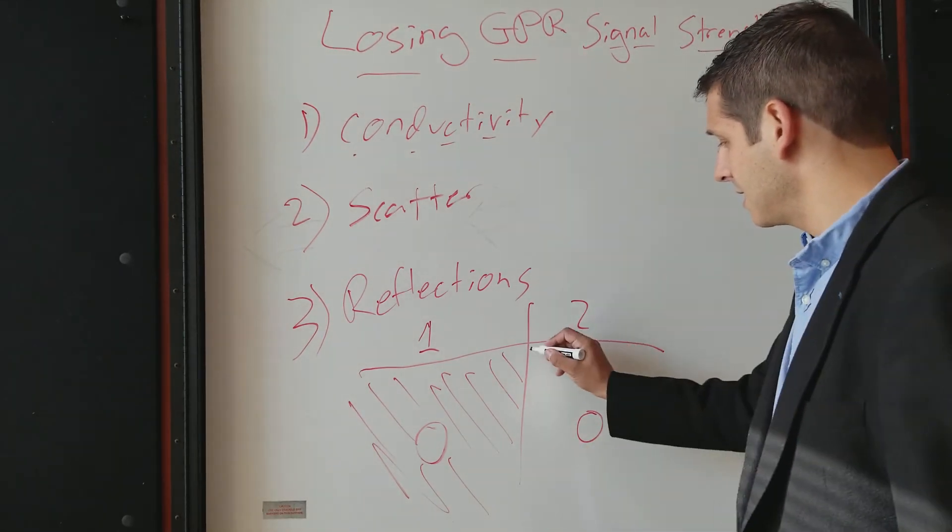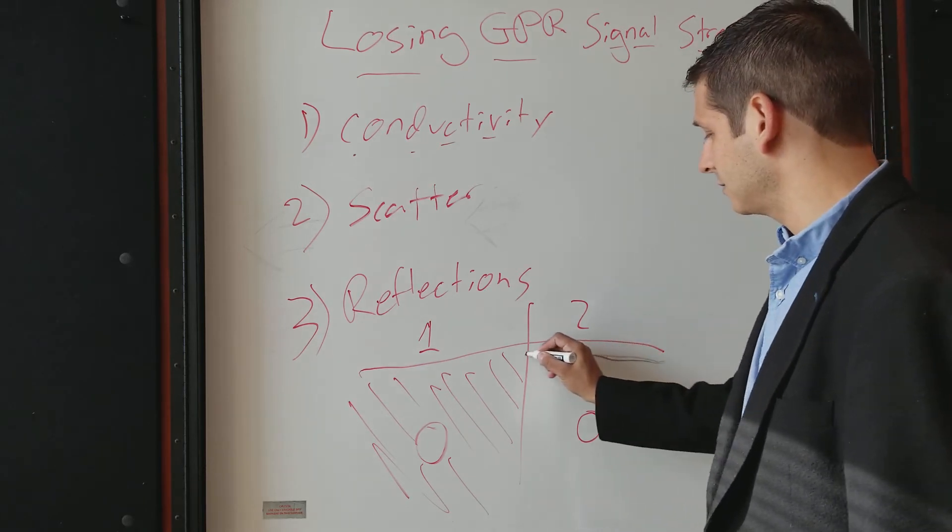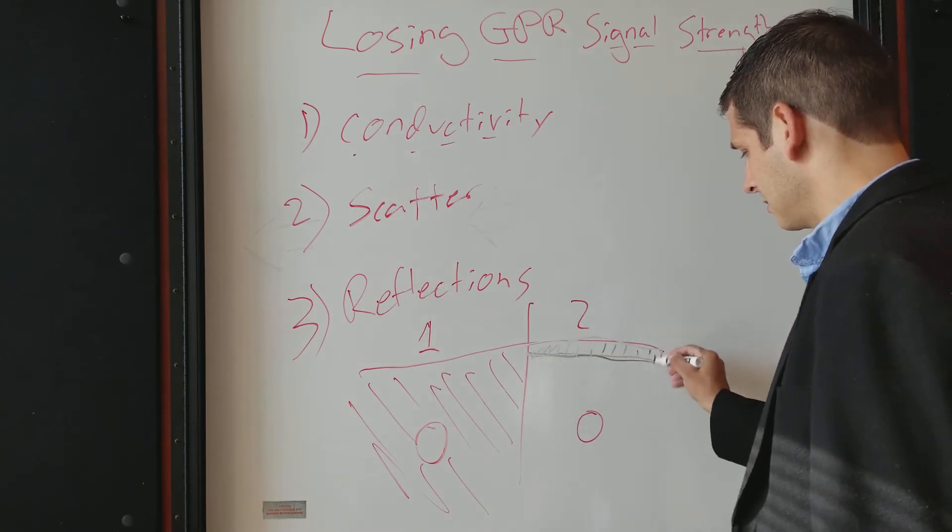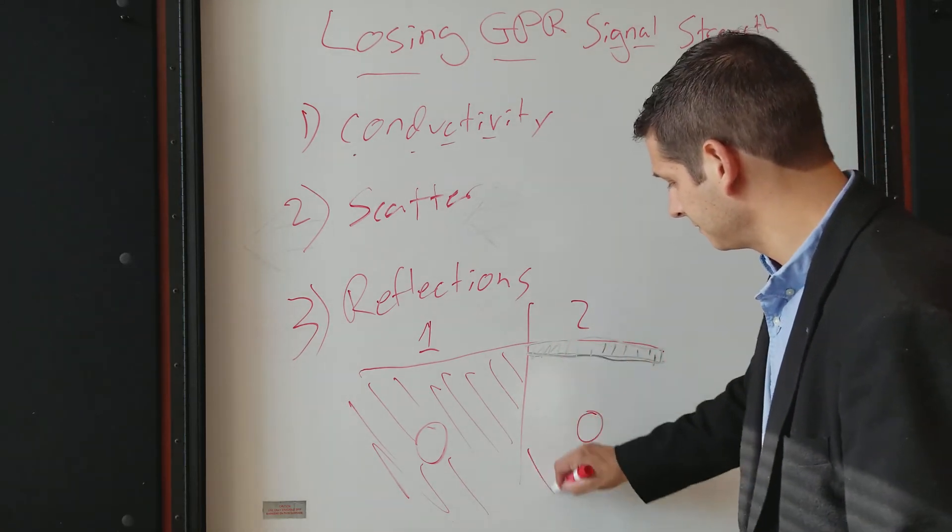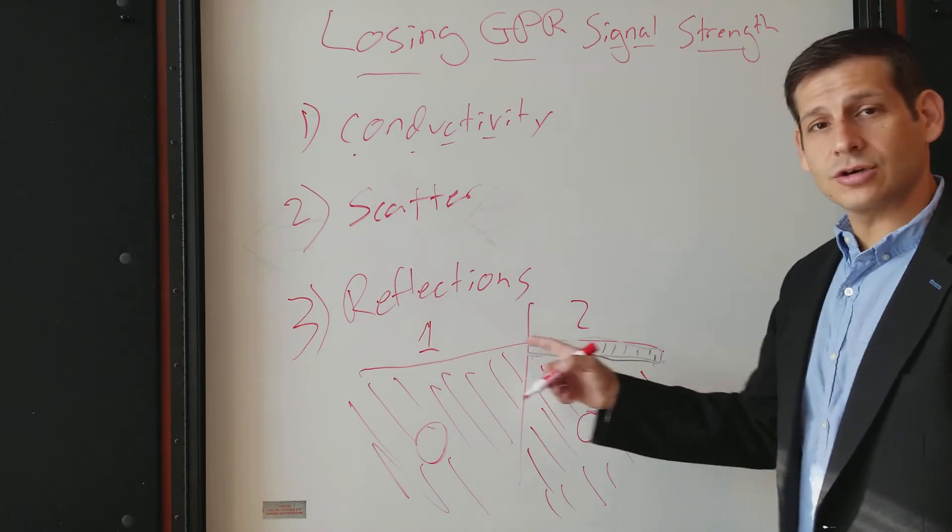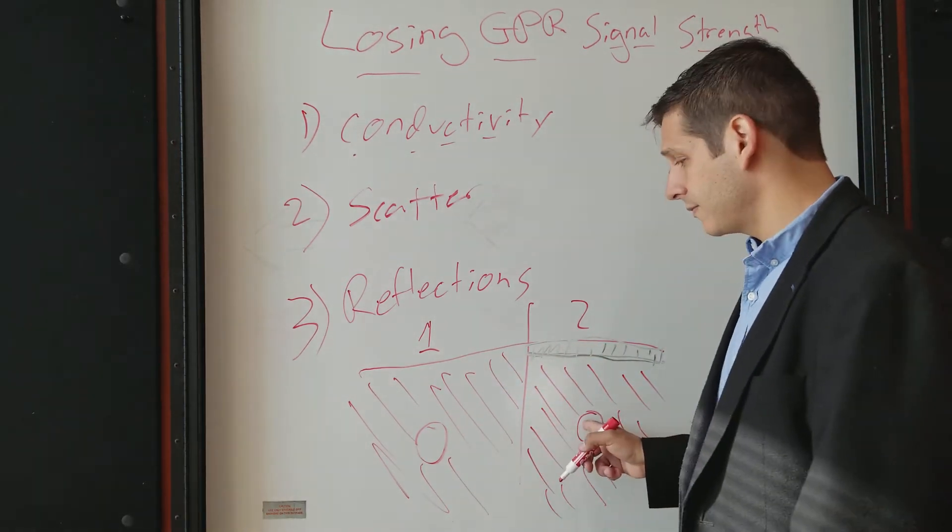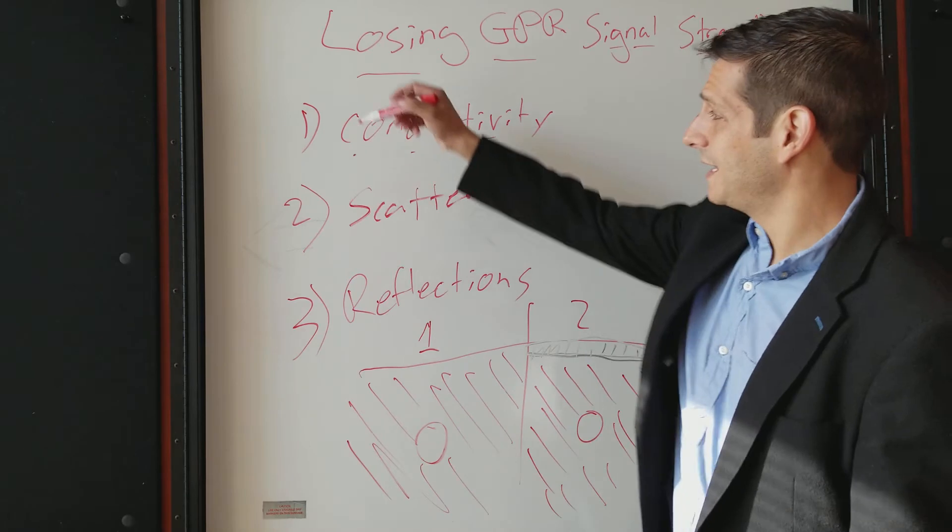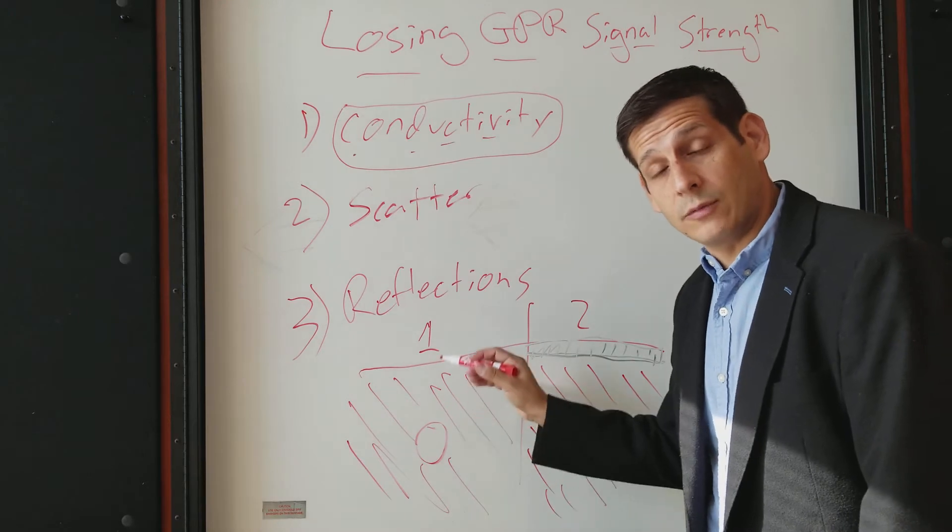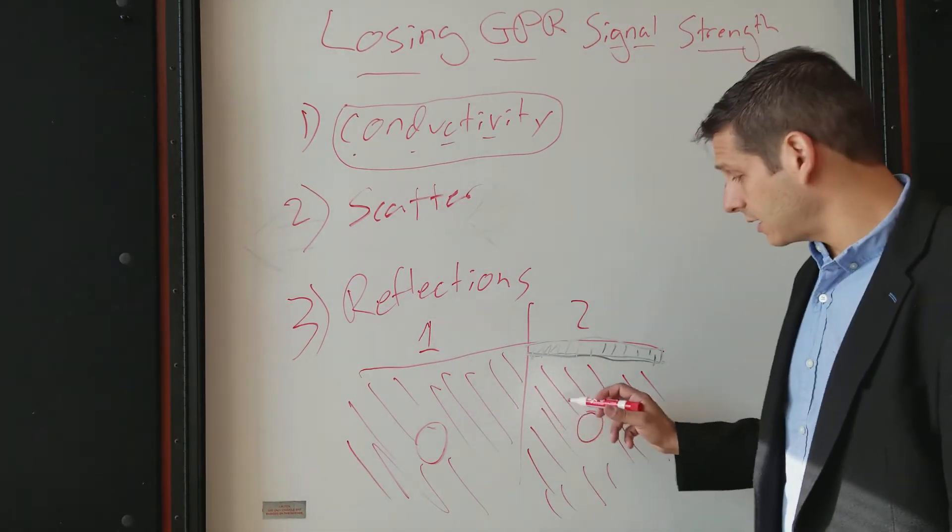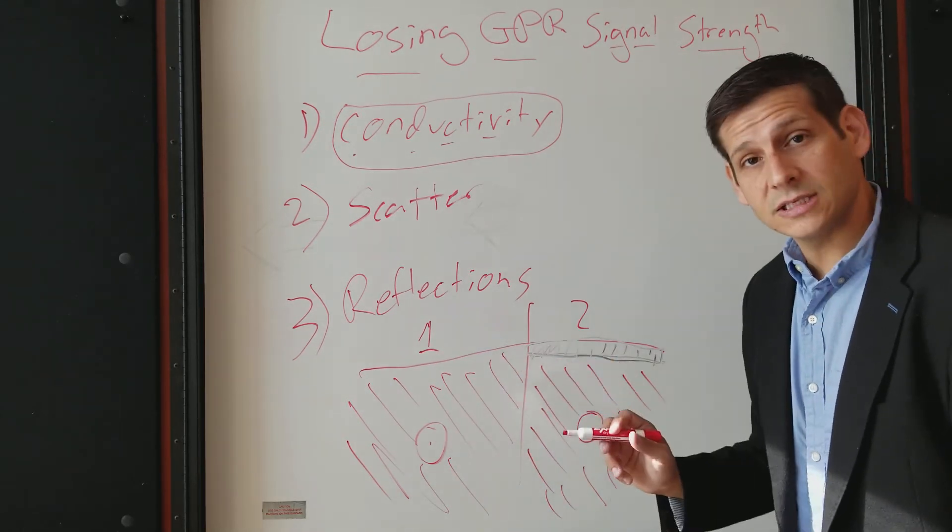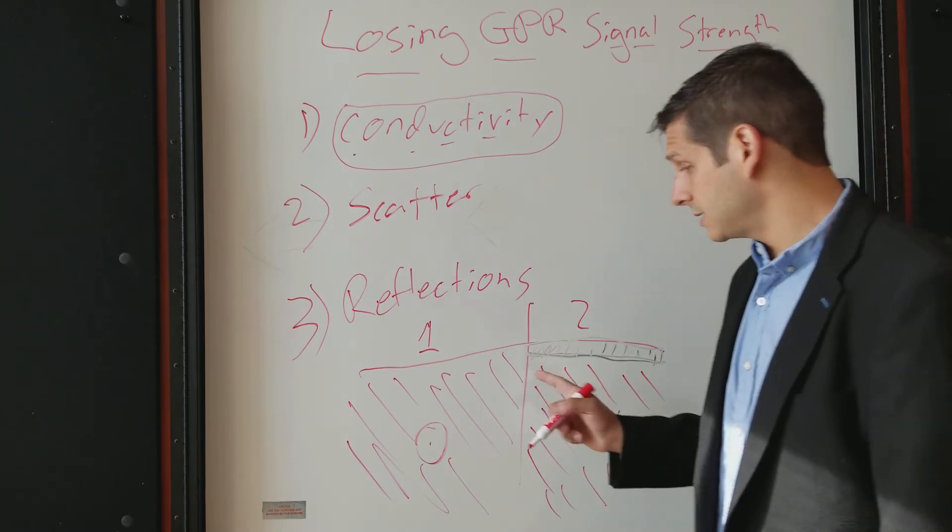In scenario two, however, let's say you have asphalt, you have an asphalt layer, and then you have clay. Asphalt and clay. Under which circumstance are you going to have a better shot of seeing your pipe? Now clay we know is conductive, clay is conductive, so it could be difficult to begin with. But in either case, the clay is still conductive. In which circumstance will you have a better shot of seeing this pipe, with or without the asphalt? The answer is without the asphalt,